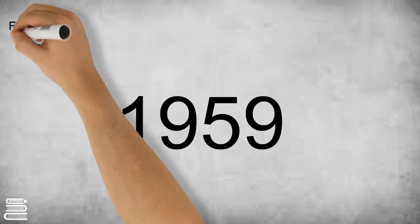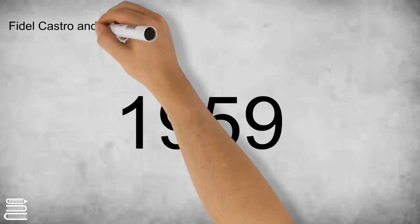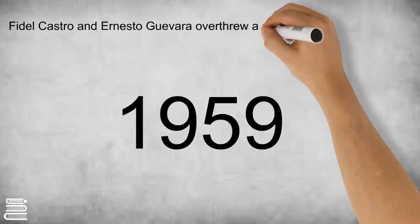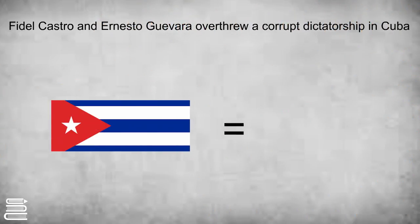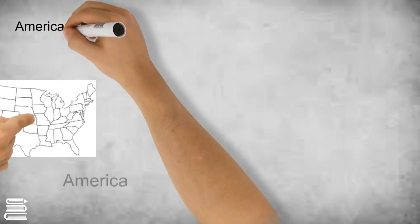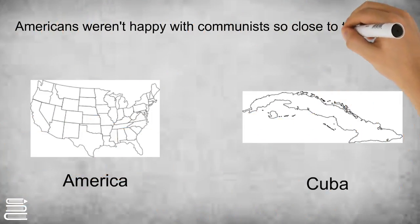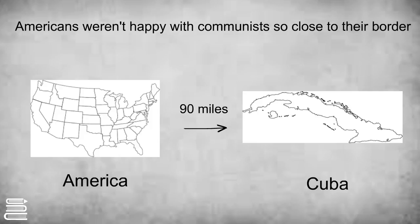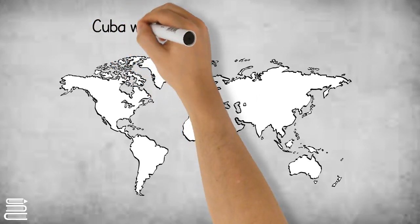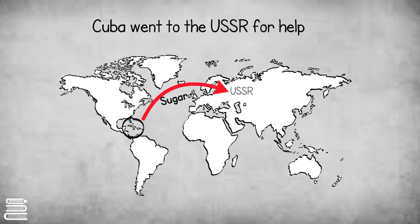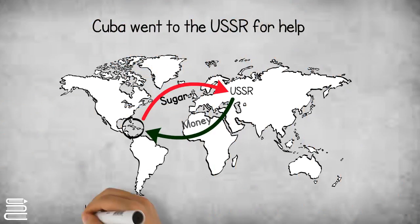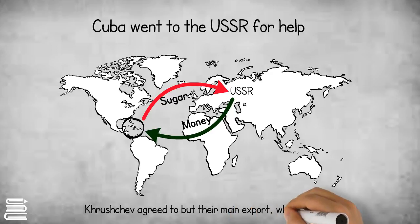In 1959, Fidel Castro and Ernesto Guevara overthrew a corrupt dictatorship in Cuba and established a communist country. The Americans were not happy with communists being so close to their border, and so they placed an embargo on Cuba. This stopped all trade between the two countries. Cuba went to the USSR for help, as they had lost their largest exporter, and Nikita Khrushchev agreed to buy their main export, which was sugar.